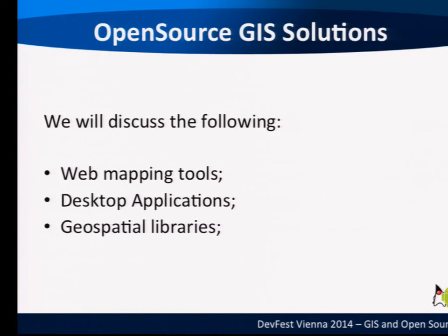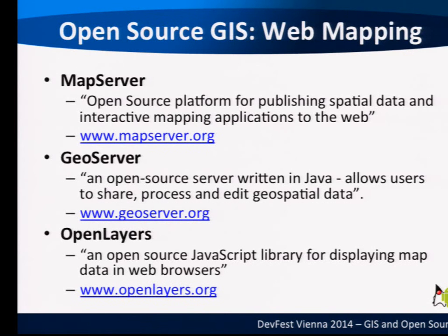GeoServer is written in Java and can run as a Java applet. It also offers WMS and WFS services and is released under a different license. It allows users to share, process, and edit geospatial data and display dynamic maps. It is used by many organizations — there are some very nice examples from FAO, UNEP, World Bank, and the Global Mercury Observation System. Let's look at what FAO did with GeoServer.